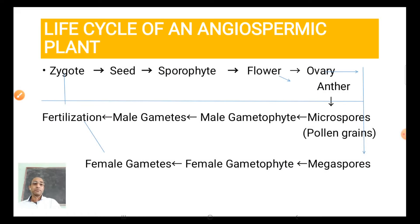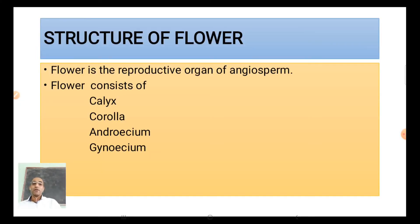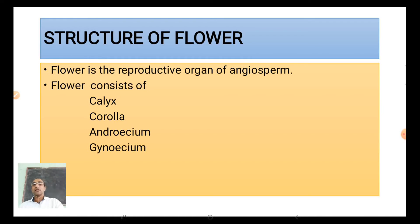Now let us look at the structure of a flower. You have studied the different parts of a flower in the morphology section previously, so let us revise. The flower is the reproductive organ of an angiosperm. It consists of four important whorls: Calyx, Corolla, Androecium, and Gynoecium — going from the outside inward.